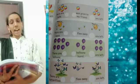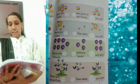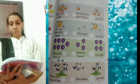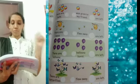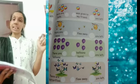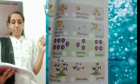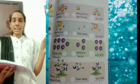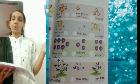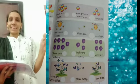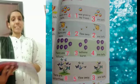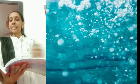Look at the last picture. How many butterflies are there? One, two, three, four, five, six, seven, eight. Eight butterflies. How many butterflies flew away? One, two, three, four, five. Then how many are left? Three butterflies are left.